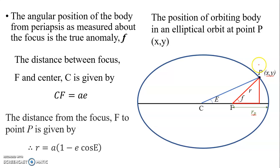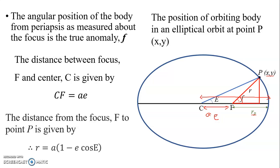If we use the focus as a reference for the position of the body, the angle from the semi-major axis to the position of the body P — which we call angle F — is the true anomaly. The distance between the focus F and center C can be calculated as A times E (semi-major times eccentricity). The distance from the focus to the body point P is calculated using this equation, where R is the position of the body.